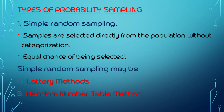There are types of probability sampling. The first is simple random sampling. In probability sampling, there is also restricted random sampling. In simple random sampling, samples are selected directly from the population without categorization.